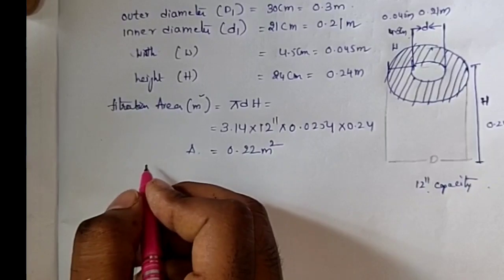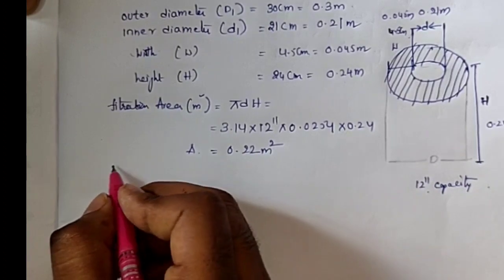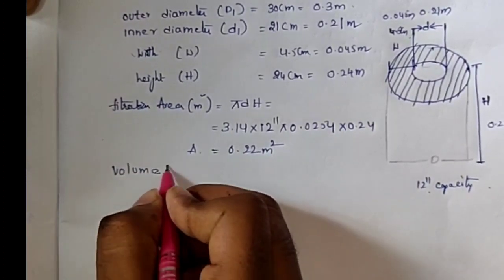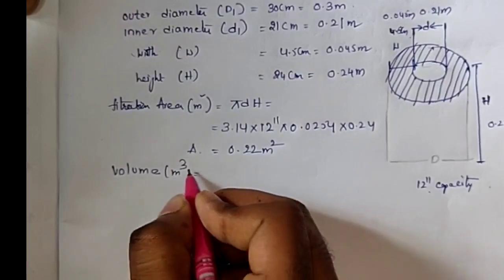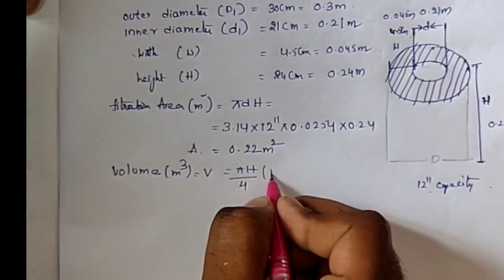And if you want to find out the volume of the hollow cylinder, you know the formula: V = (πH/4)(D² - d²).